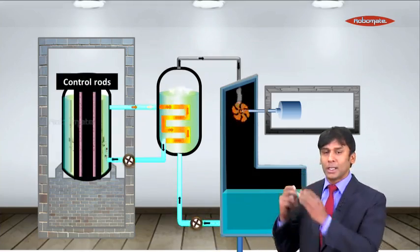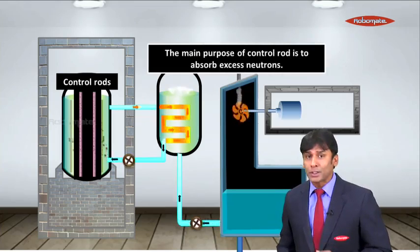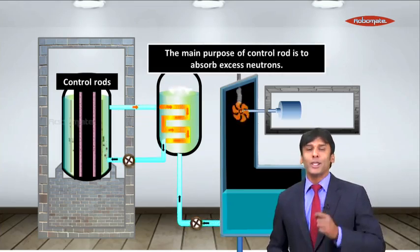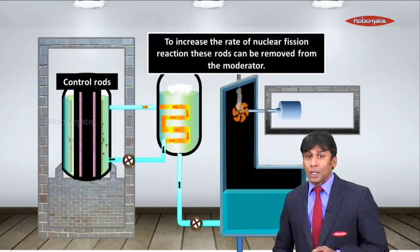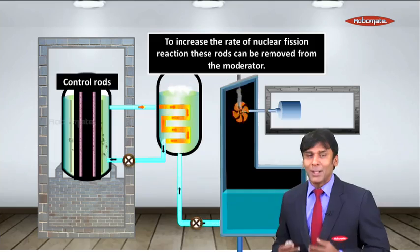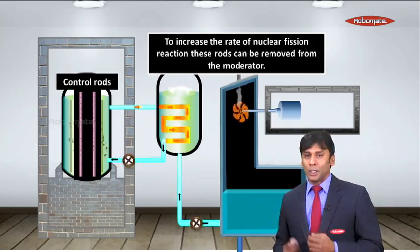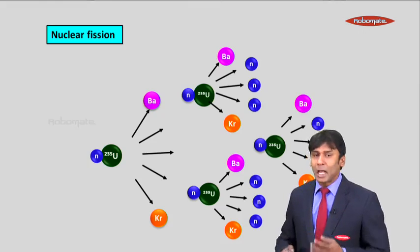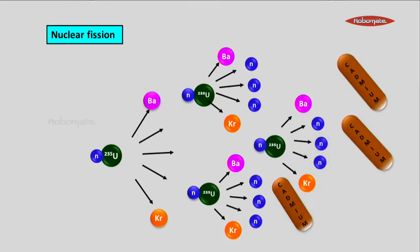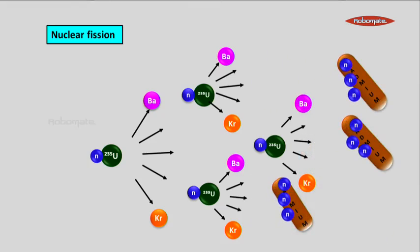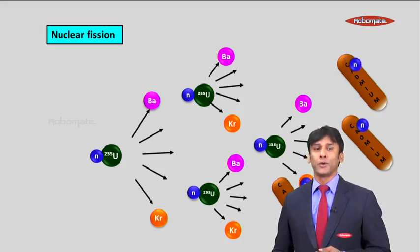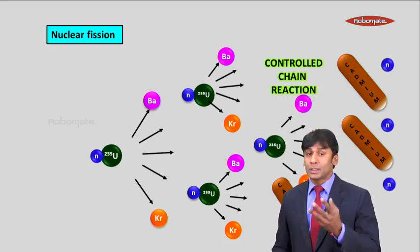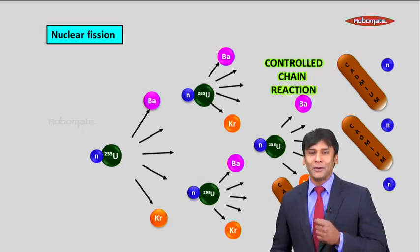Here, these are the control rods. Now what is the function of the control rods? The main purpose of control rod is to absorb excess neutrons. Now to increase the rate of nuclear fission, sometimes these rods can be removed from the moderator. So if you remove, the fission reaction will expand faster. So these neutrons are made incident on the control rods, that is cadmium. So when they are incident on cadmium, excess of these neutrons are absorbed and only a limited number of neutrons are left to carry forward the fission process. When it is controlled, this is called controlled chain reaction.